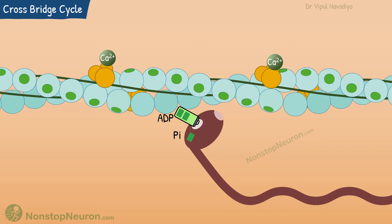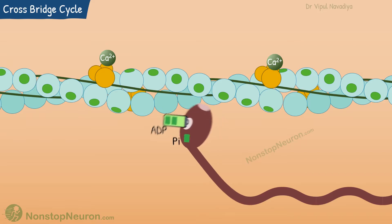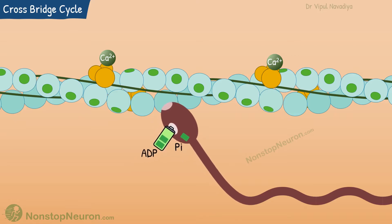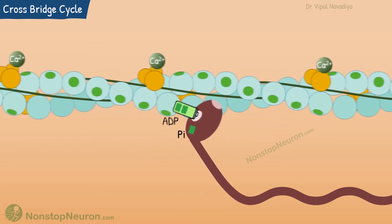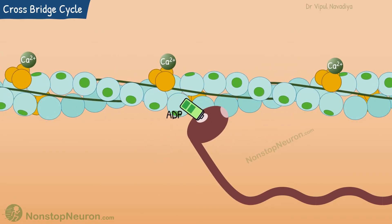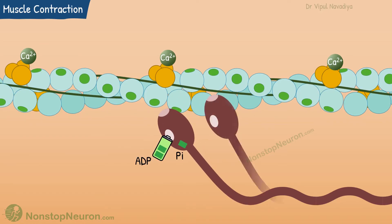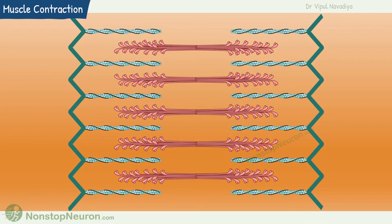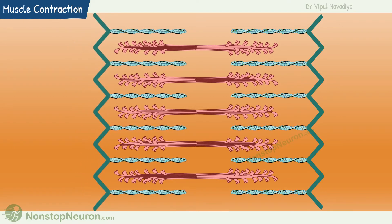The ATP is then split by myosin ATPase activity into phosphate and ADP. The released energy is used to return the head to the initial cocked state. Now it binds with another actin molecule and the entire cycle is repeated. This continues to occur as long as the binding site on actin is uncovered. The other head of the same myosin molecule, as well as all other myosin molecules, do the same thing.